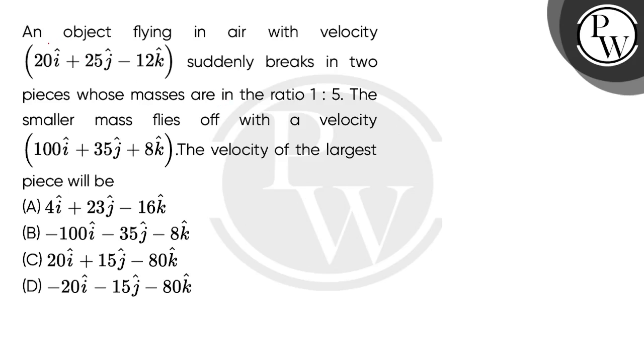Hello, let's take the question. An object flying in air with velocity 20i cap plus 25j cap minus 12k cap suddenly breaks in two pieces whose masses are in the ratio 1 is to 5. The smaller mass flies off with a velocity 100i cap plus 35j cap plus 8k cap. The velocity of the largest piece will be.